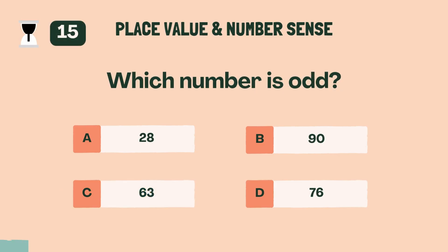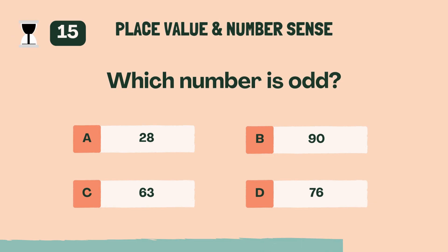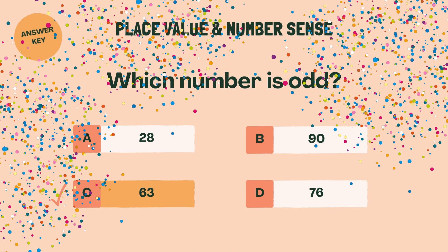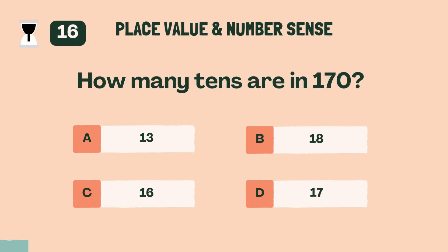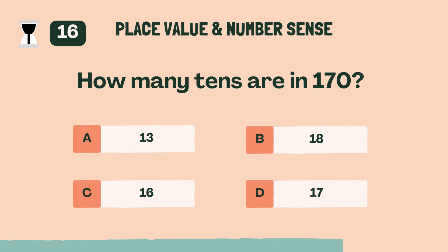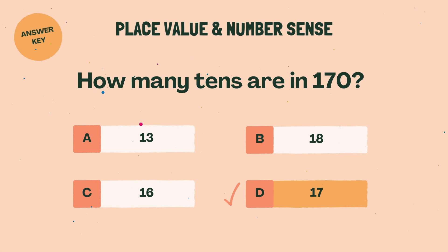Which number is odd? C, 63. How many tens are in 170? D, 17.